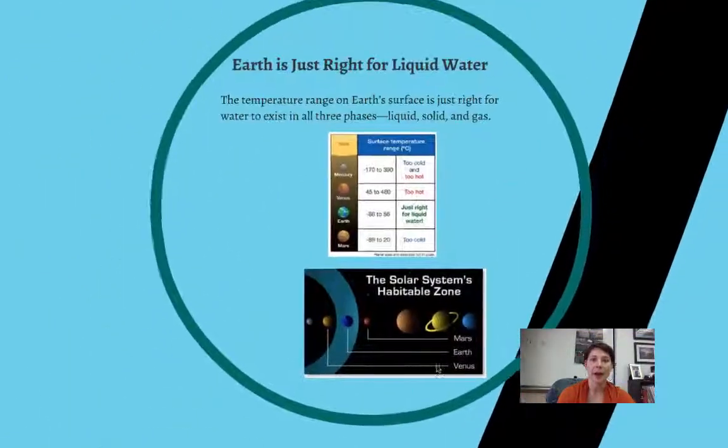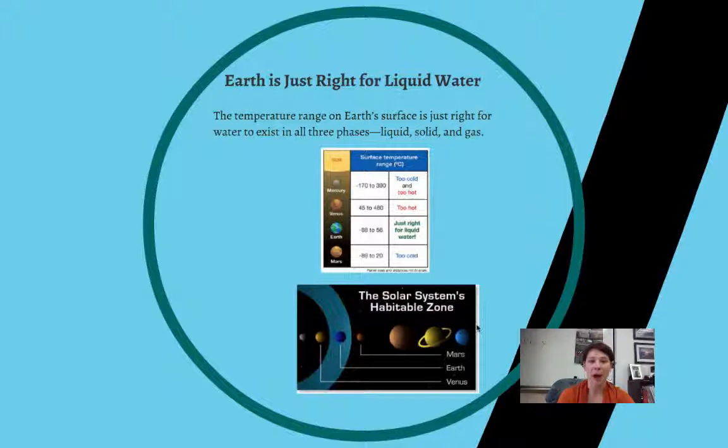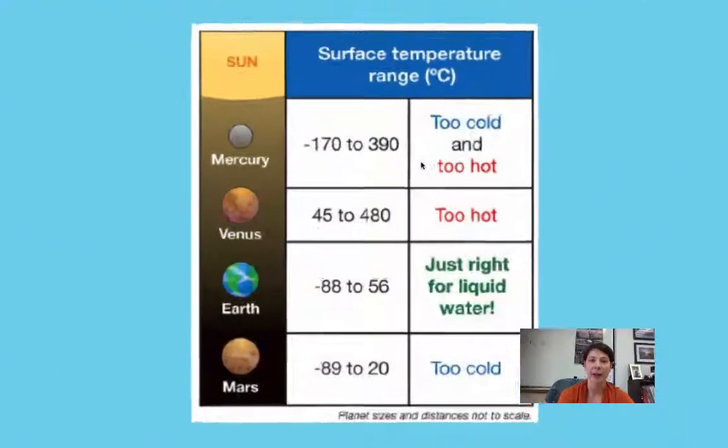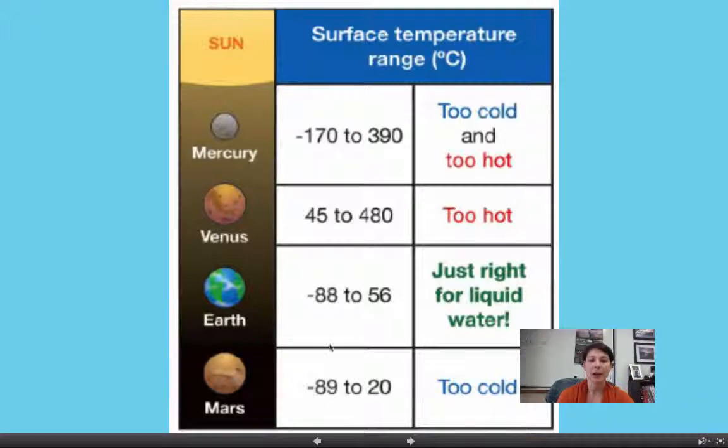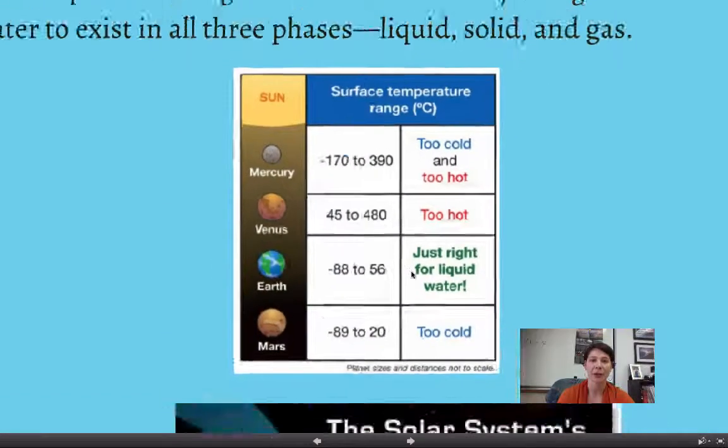So then I just wanted to focus a little bit on why Earth is so special. So Earth is really special because it has this unique temperature range that allows it to have water on Earth exist in all three phases. We talked about the liquid, solid, and gas forms of water and where they are in the hydrosphere. So Mercury is either too cold or too hot for liquid water to exist. Venus is just too hot. Mars is too cold, right? But the Earth is just right for liquid water to exist. And that is a really special thing.